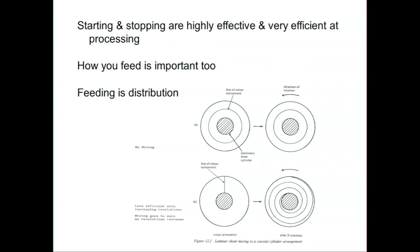Stopping and starting is actually highly effective and very efficient. How you feed is also very important: if you feed such that the material goes back on itself, you get very poor mixing. However, if you feed across the mixer, you generate a lot of surface area. You can take a very bad mixer and change how it's being fed and get good results. Feeding is extremely important.